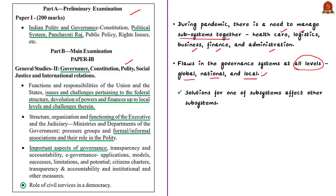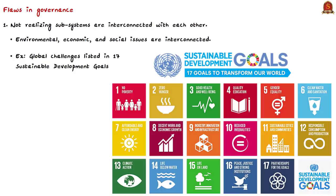The pandemic also revealed that solutions for one subsystem affect other subsystems. For example, lockdowns were implemented to manage the health crisis, but managing economic activities became difficult, leading to economic distress. The first and foremost flaw is not realizing that subsystems are interconnected; therefore, environmental, economic, and social issues are also interconnected. Looking at the 17 Sustainable Development Goals of the United Nations, one can see this interconnectedness — for example, to eradicate poverty, we need to achieve goals of zero hunger, good health, empowering women, and reduced inequality.